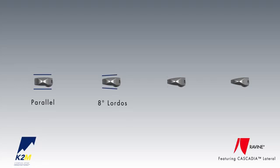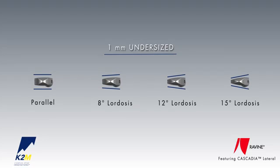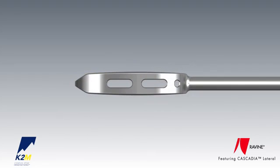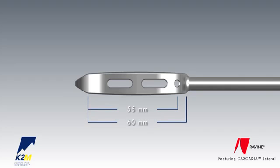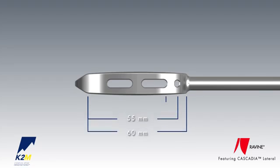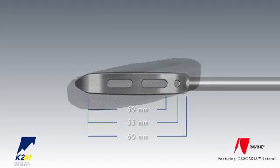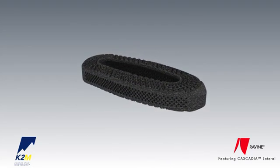Trials are available in parallel 8, 12, and 15 degrees lordosis and are 1mm undersized in height to allow for a slight press fit of the implant. The 60mm length trials are used to measure if a 45, 50, 55, or 60mm Cascadia implant is needed. When looking at a true AP fluoroscopy image, the distance from the ipsilateral end of the trial body to the beginning of the bulleted tip measures 60mm. The distance from the AP cannulation to the beginning of the bulleted tip measures 55mm, and from the beginning of the ipsilateral side of the first trial AP cavity to the bulleted tip is 50mm. If correct placement reads any distance shorter than that, a 45mm implant should be used.